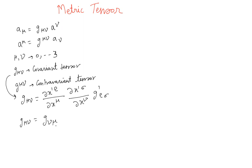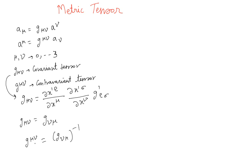These are some of the properties. We also know that G_mu_nu, when written in matrix form, is a 4 by 4 matrix, which means it has 16 elements. If you take the inverse of that matrix you get G^mu_nu. Since it's a symmetric tensor, it has only 10 independent components.